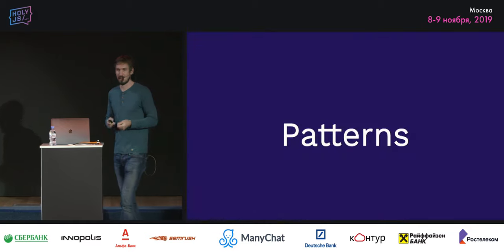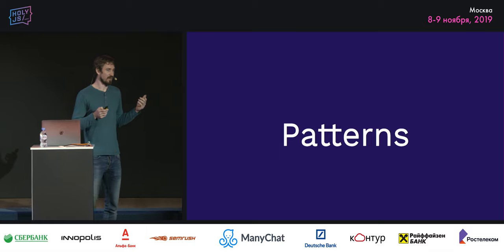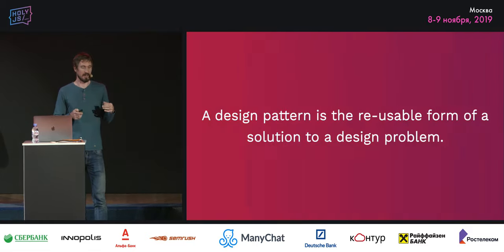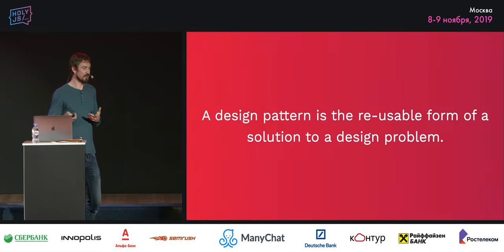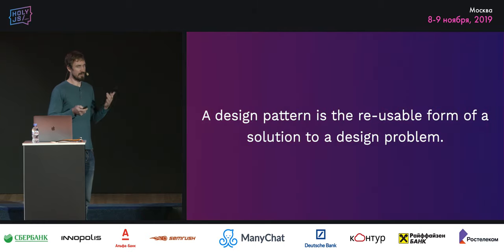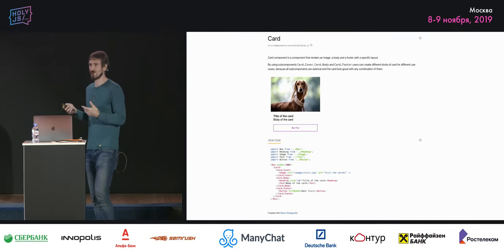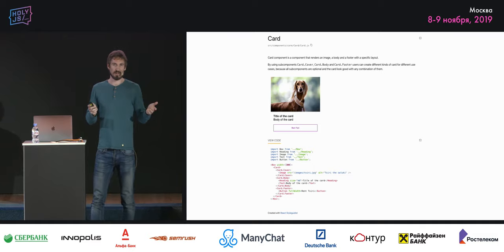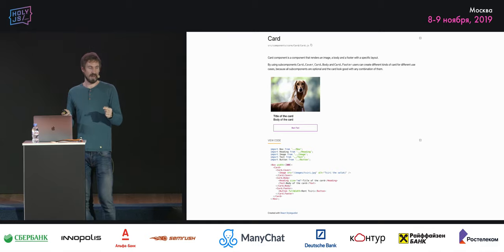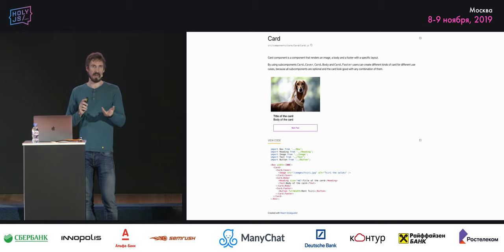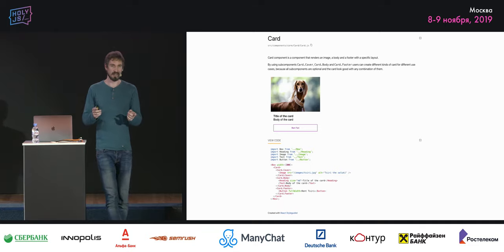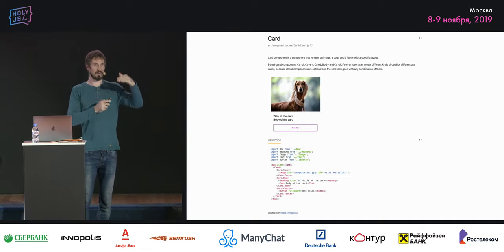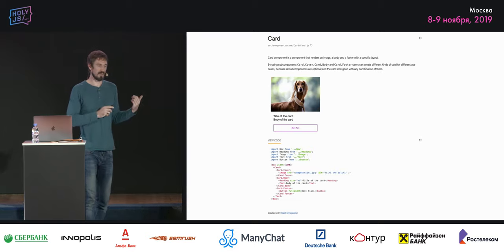Primitives are meant to be composed and are extendable. The next level is creating patterns out of your primitives. A pattern is a reusable form of a solution to a design problem — in this case, a UI pattern. For example, a card component: we want all cards in the app to look similar, but still control what's rendered inside. We create a Card DSL with CardCover, CardBody, CardFooter, and the card component knows how to lay them out. You don't do any layout when using a card, but it's flexible enough to render whatever you want.